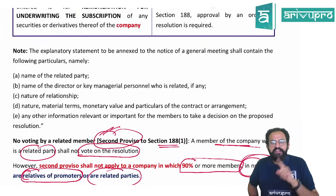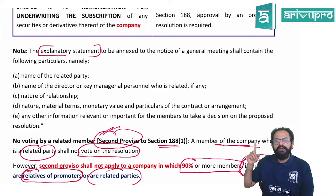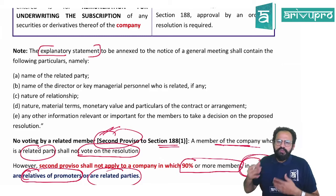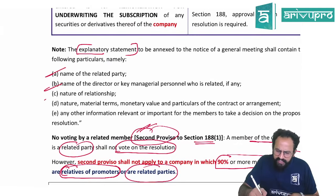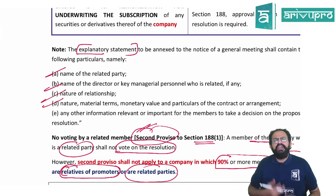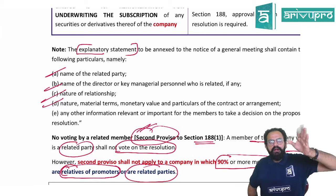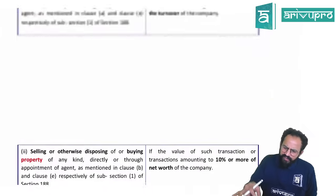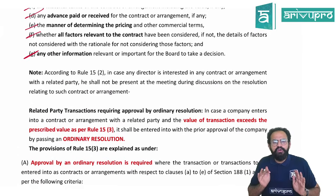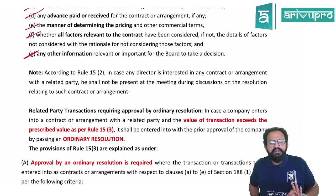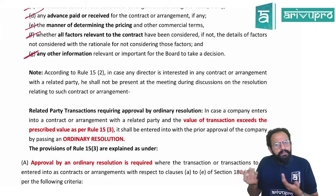When calling shareholders for a meeting to pass the ordinary resolution, in the explanatory statement under section 102 given along with the notice to shareholders, you must also add details: who is the director, how is he related, what is the relationship, what is the value, how was it arrived at — every piece of information must be disclosed to the shareholders. The law is not saying you cannot enter into a contract with a related party. Within the limit — pass a board resolution. Beyond the limit — pass an ordinary resolution. That's all.